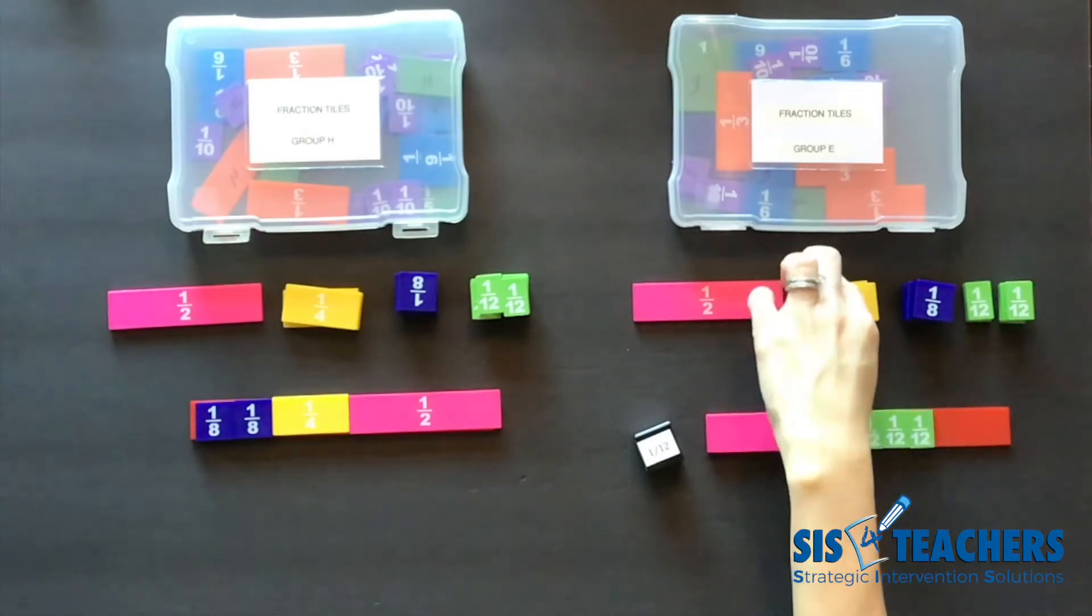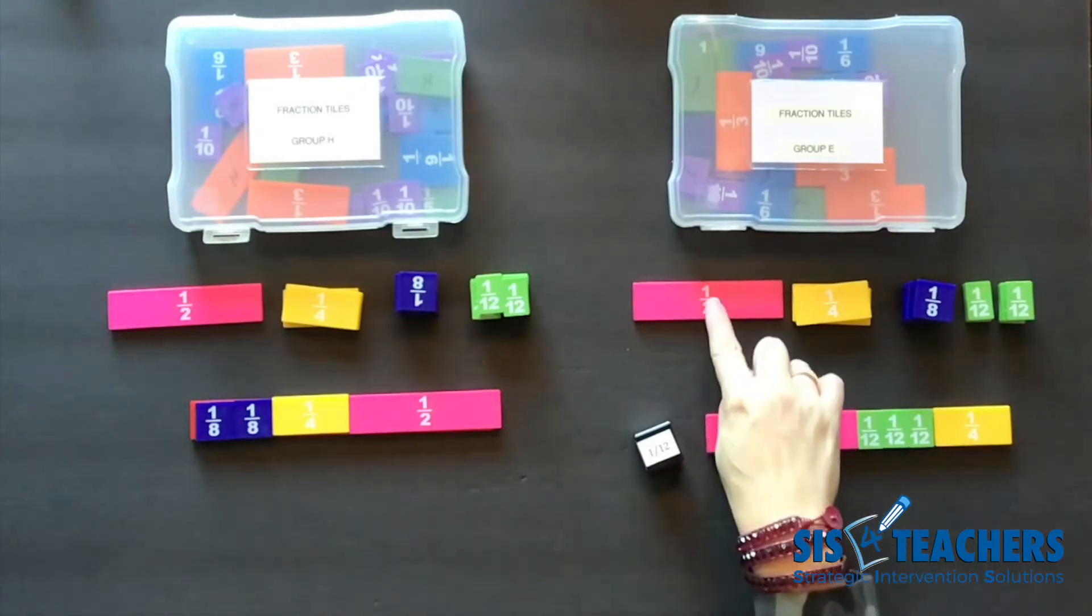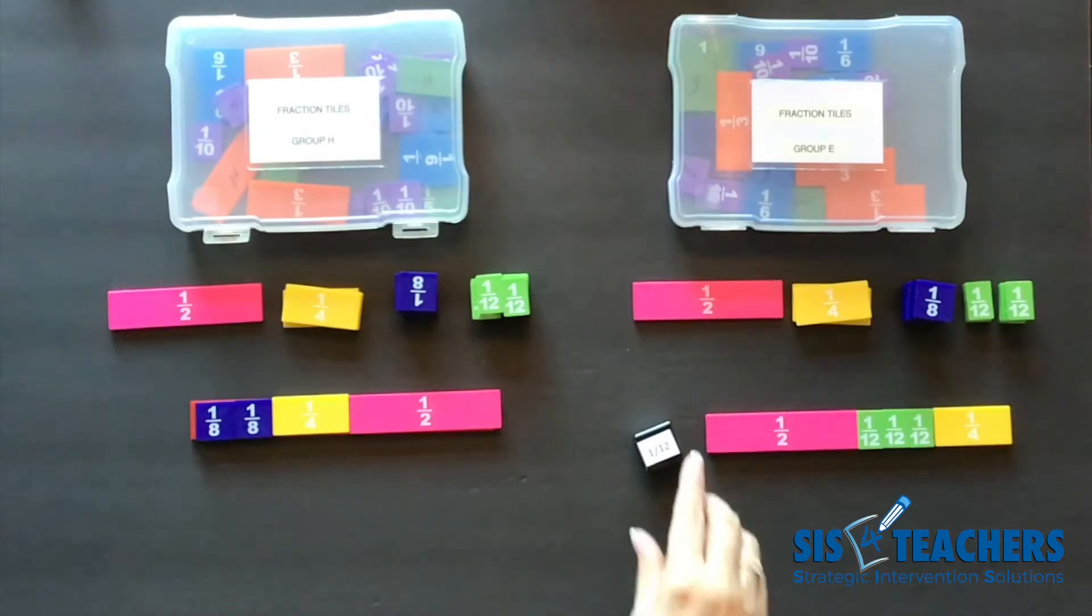So far she has her 3/12 and then 1/4. 3/12 and 1/4 equal her 1/2. So they're equivalent pieces instead of the same pieces like we played in version 1. She can't pull anything off.